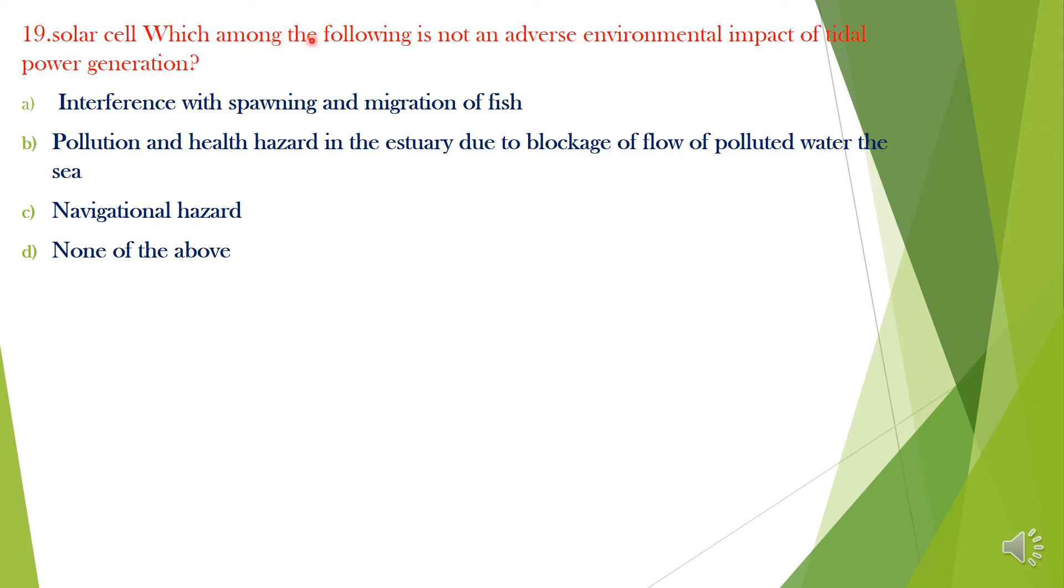Question 19. Which among the following is not an adverse environmental impact of tidal power generation? A. Interference with spawning and migration of fish, B. Pollution and health hazard in the estuary due to blockage of low polluted water, C. Navigational hazard, D. None of the above. Answer is Option D, None of the above.